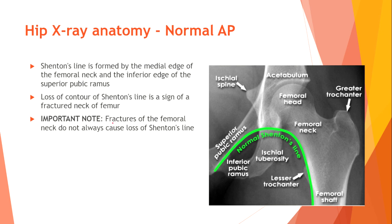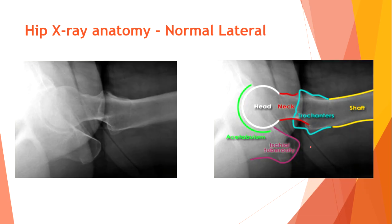Anatomical landmarks on the anterior-posterior view include: superior pubic ramus, ischial spine, acetabulum, femoral head, greater trochanter, femoral neck, lesser trochanter, ischial tuberosity, and femoral shaft. The normal lateral view shows: acetabulum, ischial tuberosity, head of the femoral neck, trochanter, and shaft.